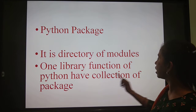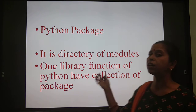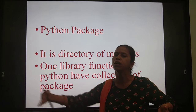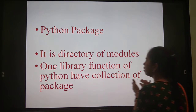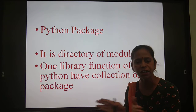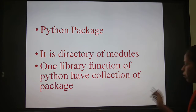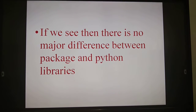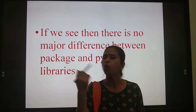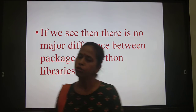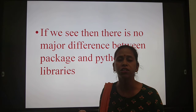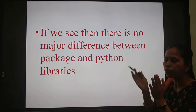In one library function, we have a collection of packages — small, small packages, which are small, small modules. If you see, there is no major difference between package and modules. Package is made by modules only, and modules are made by the input command, logic command, and display command. Can you see these are all correlated with each other?